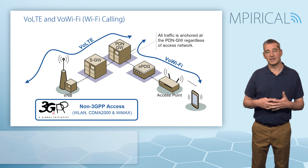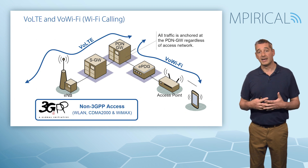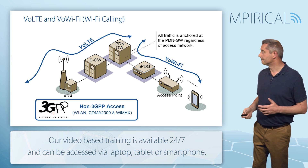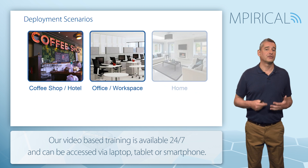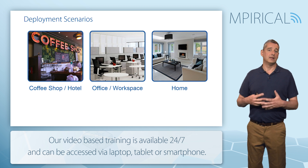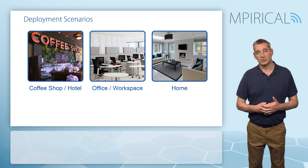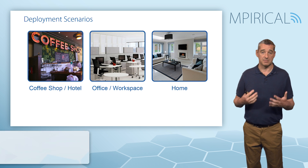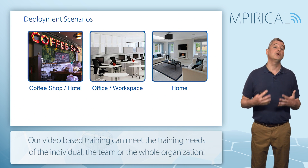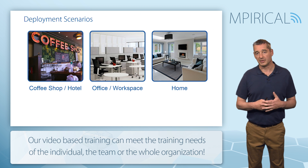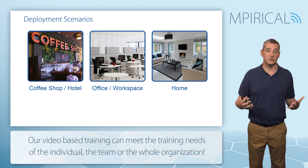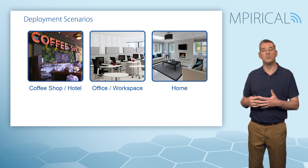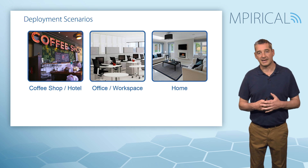Clearly in this series of videos we're going to be focusing on Wi-Fi as the non-3GPP access-based system. There are different architectural models which we can support for Wi-Fi calling, but for an untrusted non-3GPP access-based model, we would expect to be able to use Wi-Fi calling in a whole host of different environments — be that coffee shops and hotels, the office or other workspace environments, or sitting at home using the Wi-Fi associated with our broadband connectivity.